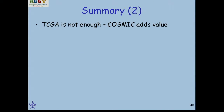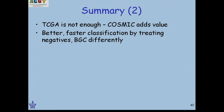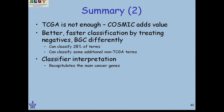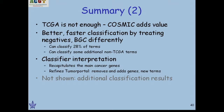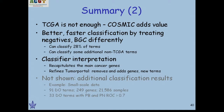To summarize: for our goals, TCGA alone was not enough, so we went to COSMIC and gained added value. We can learn better and faster classifiers by treating negatives and background controls differently. We can classify 20% of the terms tested, some not covered by TCGA. When interpreting classifiers, we recapitulate the main cancer genes for each type, and can refine tumor portal results by removing low-score genes, adding new candidates, or new terms. Analysis of COSMIC's small-scale data shows more samples from a well-preselected gene set, but only a third of disease ontology terms become well-classified.